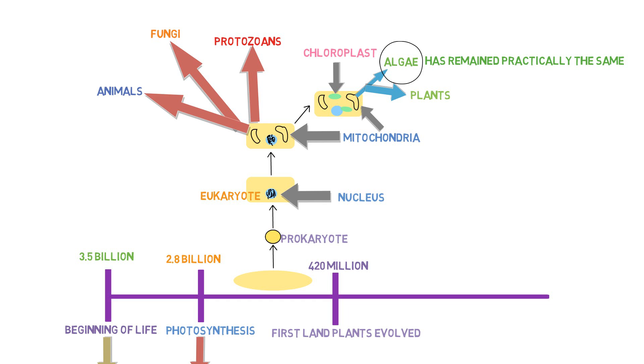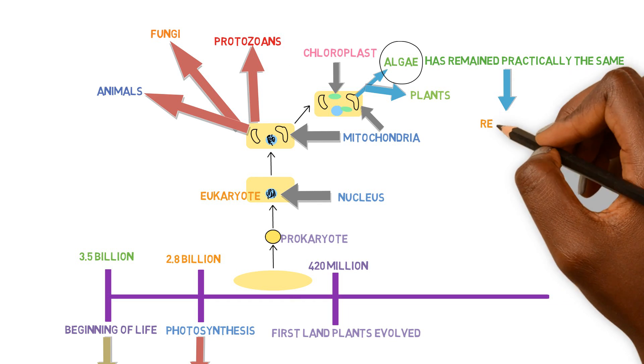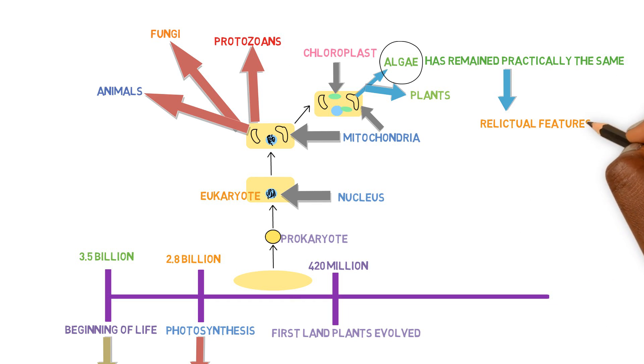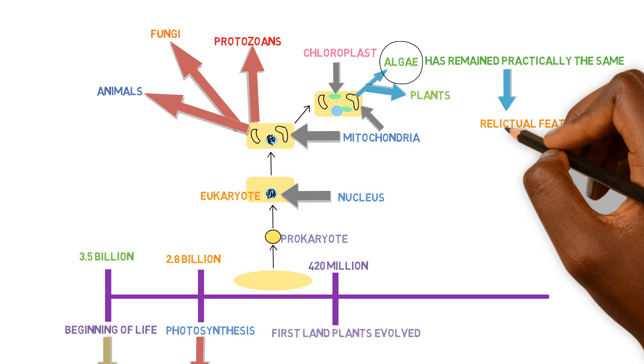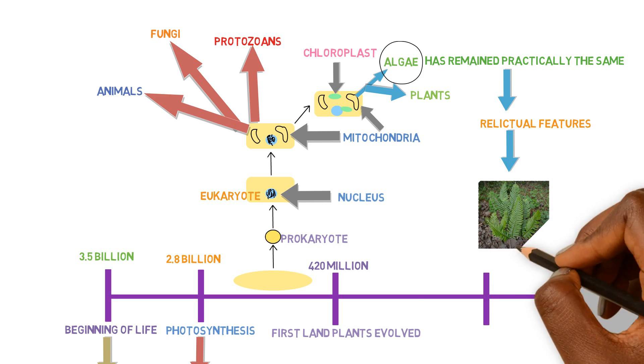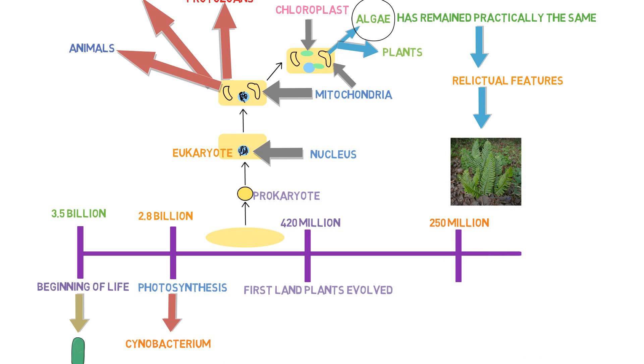We're most likely going to see the same algae in the future. The scientific term for this in plant biology is relictual features—primitive features that are pretty much unchanged. Other groups of plants are well adapted to their environment, like ferns, which haven't changed over the last 250 million years. The environment does not call for mutation or change via natural selection.